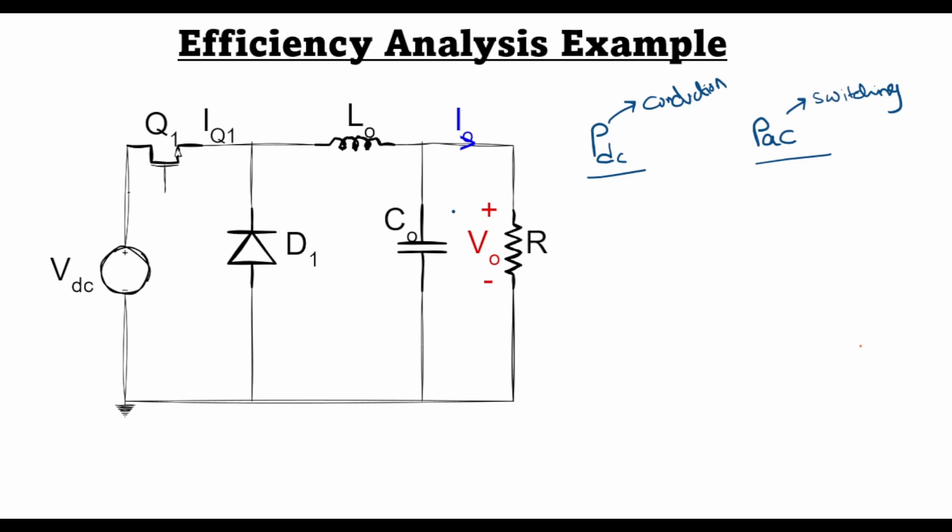So today's design example goes something like this. We have an input DC voltage of 48 volts which we want to step down to 5 volts with a buck converter.